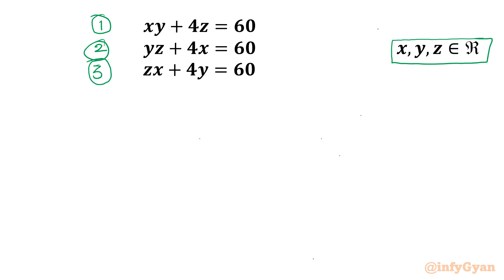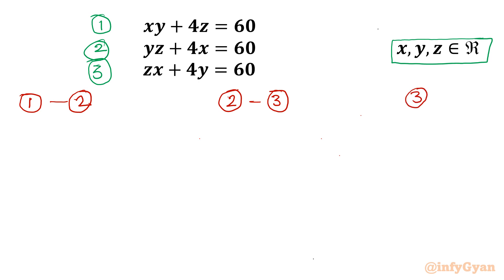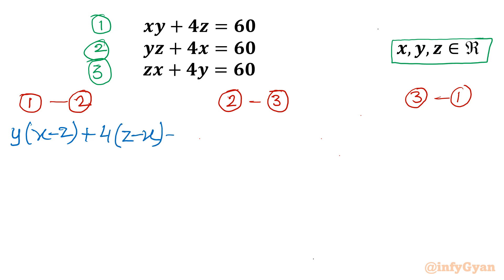Now I will perform three operations. Operation 1: I will subtract equation 2 from equation 1. Operation 2: I will subtract equation 3 from equation 2. And operation 3 will be equation 3 minus equation 1. Writing equation 1 minus equation 2: y is common, giving x minus z; then 4 is common, giving z minus x; equals 60 minus 60, so 0.